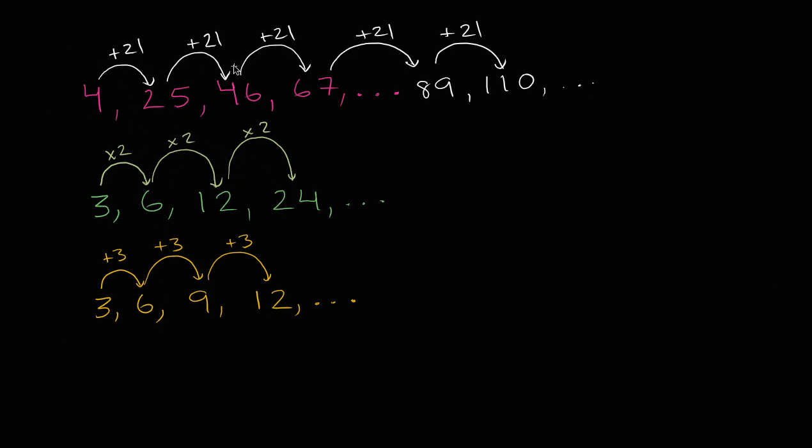But here we figured it out. In this first set of numbers, we just add 21 every time. This one we multiply by two every time. This one we add three every time.